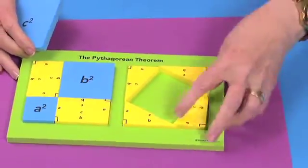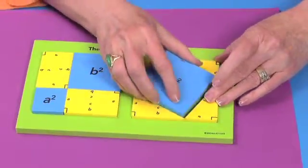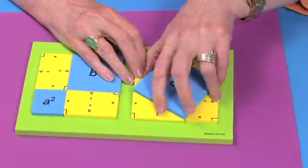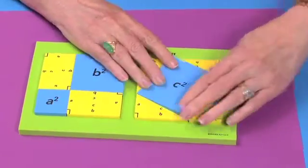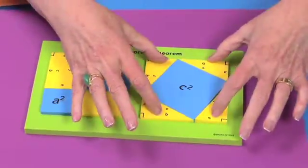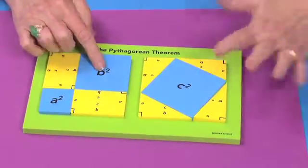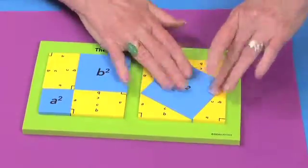By just configuring the triangles within the frame in this fashion, it allows you then to go back and slide in the foam tile for C squared, and it perfectly fits. So if you then subtract out the four triangles, you are left with A squared plus B squared does in fact equal C squared.